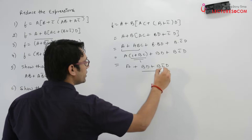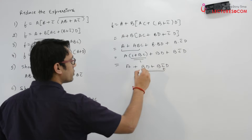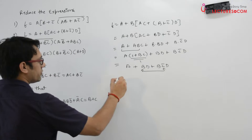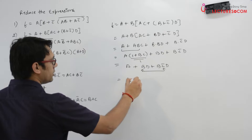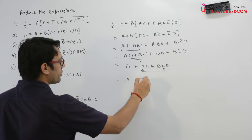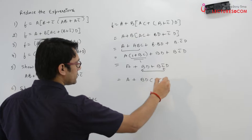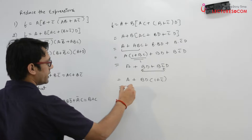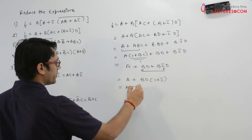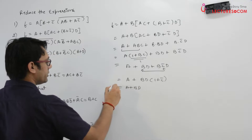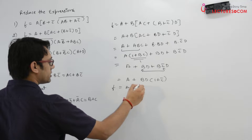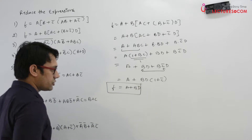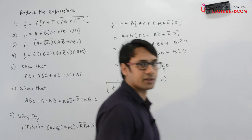Again, between these two expressions you can take bd as common. So it will be a + bd(1 + c'), which can be written as a + bd. So this above function can be minimized to a + bd.